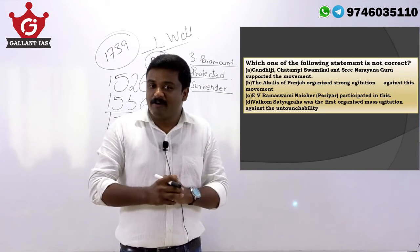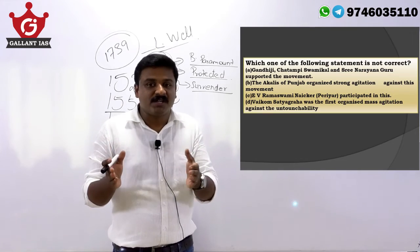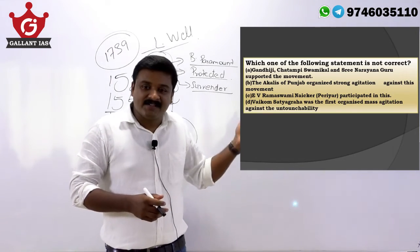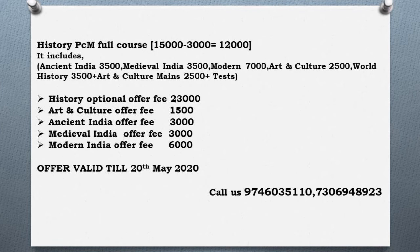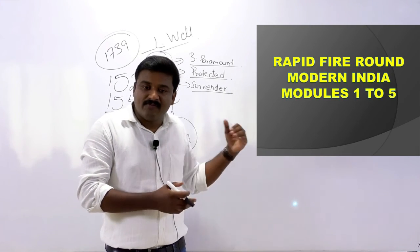If you find this session helpful for your preparation, please subscribe to our channel and mention your suggestions in the comment section. Our History PCM course fee is 15,000, but due to COVID-19 lockdown, the offer fee is 12,000, which includes Ancient India, Medieval India, Modern India, Art and Culture, World History, Art and Culture for Mains, Modern India for Mains, plus test series. History Optional fee is 25,000, offer fee is 23,000. Feel free to contact us for further details.